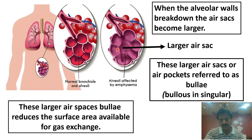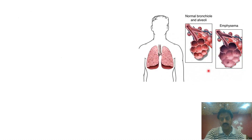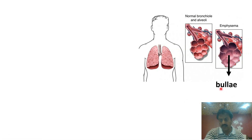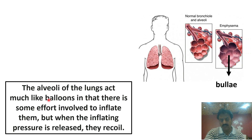جب یہ air pockets بڑے ہو جاتے ہیں emphysema میں، تو surface area for gaseous exchange reduce ہو جاتا ہے اور زیادہ oxygen alveoli سے diffuse نہیں ہوتی۔ Alveoli کی walls پر blood capillaries بھی loss ہو جاتے ہیں، تو oxygen کی supply کم ہو جاتی ہے۔ Alveolar walls destroy ہو گئے اور blood capillaries بھی lost ہو گئے — larger pockets بن گئے جنہیں blebs کہا جاتا ہے۔